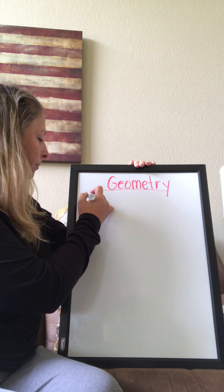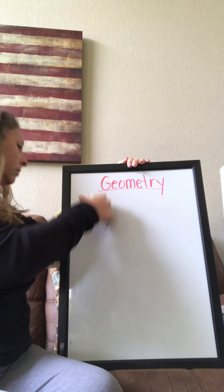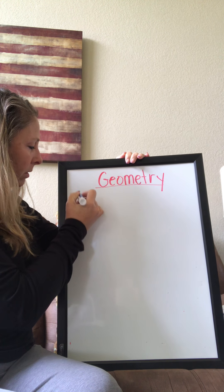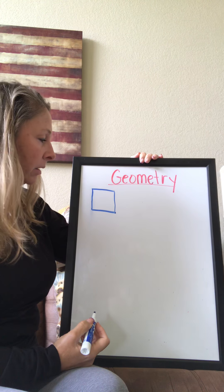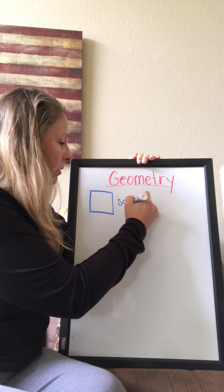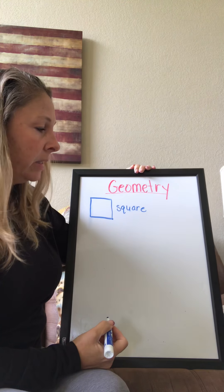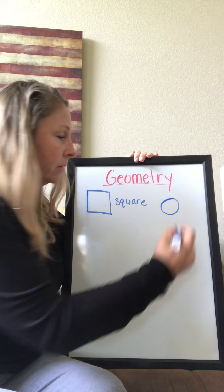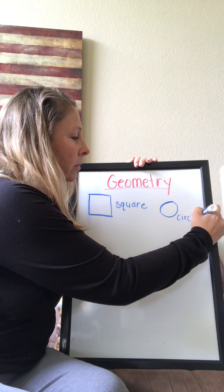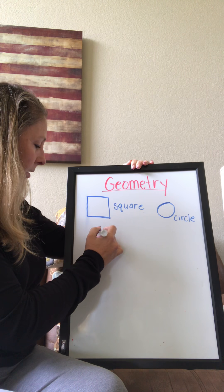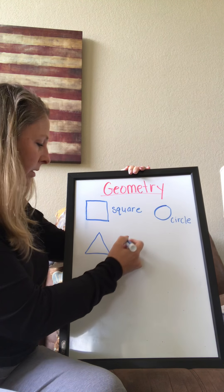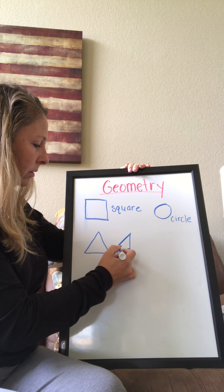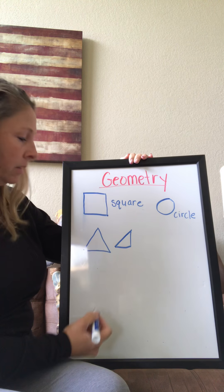So I just want to review the shape names and then we'll talk about some of the characteristics. The first shape has four lines like that, and that is called a square. The next shape is a round one called a circle. And then one with two straight lines and one on the bottom — sometimes it looks different, but it still has three lines. We call these triangles.